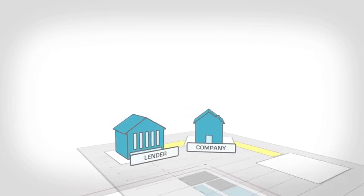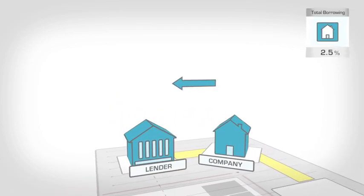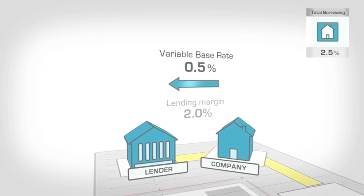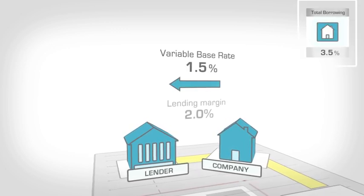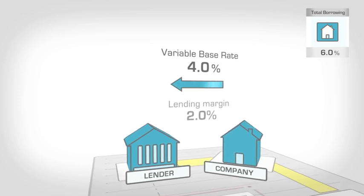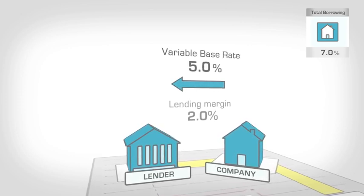Your company borrows money from a lender and, under the terms of the loan, you agree to pay the lender the variable base rate plus a lending margin. If the base rate changes, your total borrowing rate immediately reflects this change. The risk to your company is that total payments increase over the course of your loan.